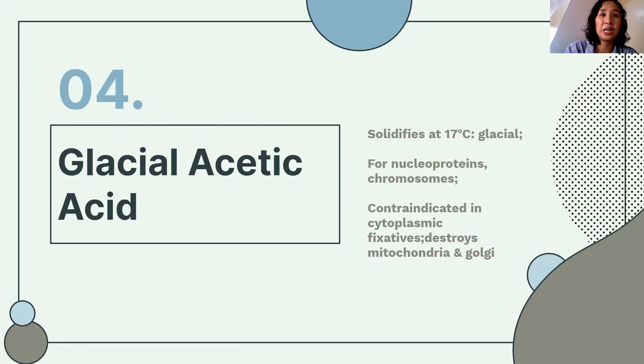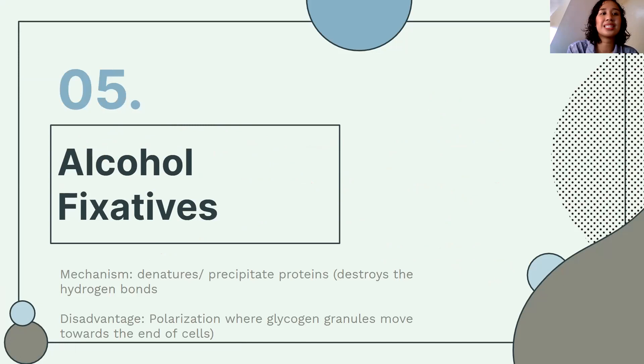Alcohol fixatives: at a certain concentration, alcohols can also serve as fixatives. They denature or precipitate proteins by destroying hydrogen bonds. A disadvantage is that glycogen granules tend to migrate toward the end of the cells — called polarization — which does not reflect the true morphological feature of the cell.